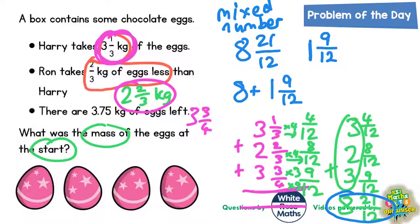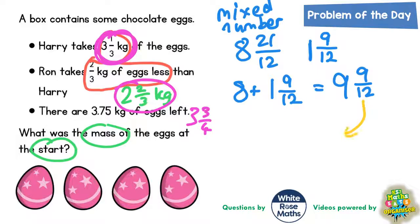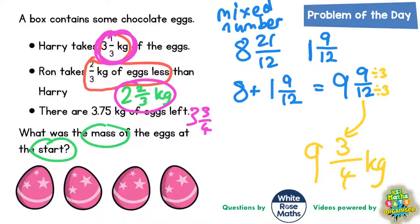So our final answer is 8 plus an extra 1, which is 9 and 9 twelfths. And if you're being even cleverer, you could simplify 9 twelfths to 3 quarters, because both 9 and 12 divide by 3: 9 divided by 3 is 3, and 12 divided by 3 is 4. So the final answer is 9 and 3 quarters of a kilogram of eggs.